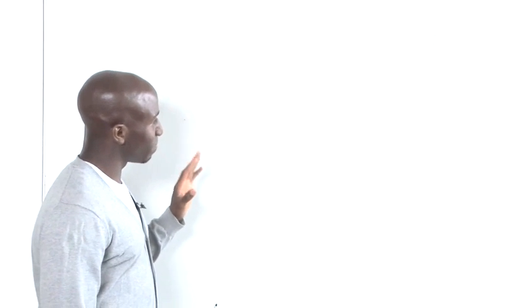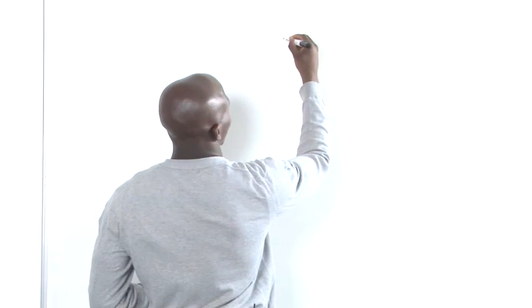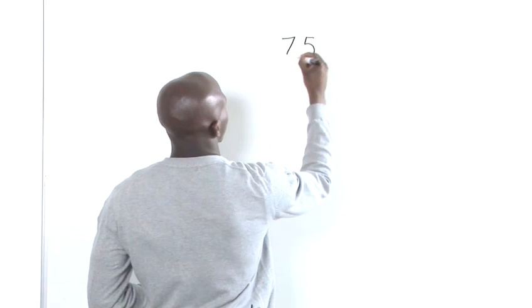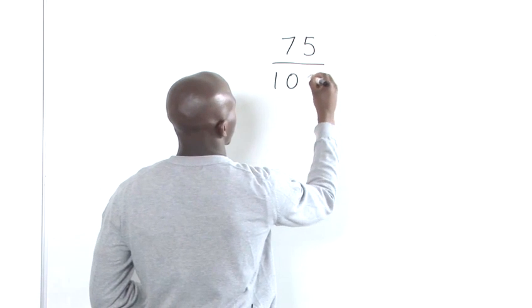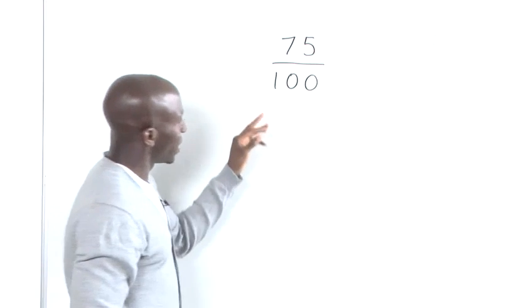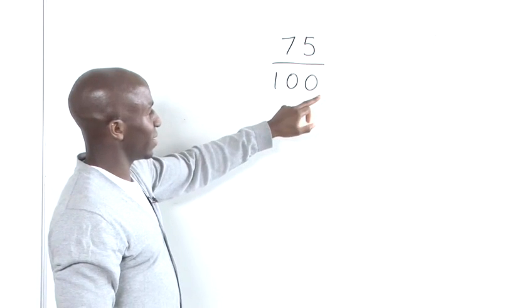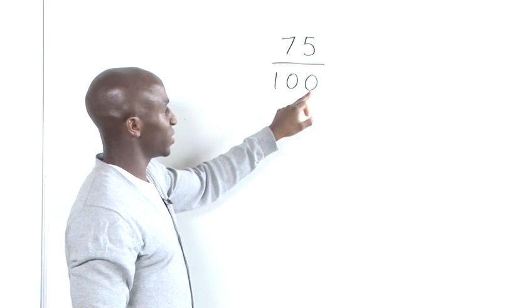So, the most basic type of fraction that we want to turn into a decimal is one that might look like this: 75 divided by 100. Now, if you look at the 100, you see two zeros.